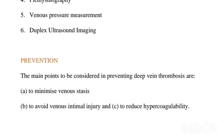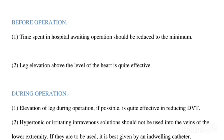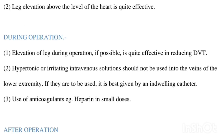Preventive measures: the main points to be considered in preventing DVT are to minimize venous stasis, to avoid venous intimal injury, and to reduce hypercoagulability. Preoperative care: time spent in hospital awaiting operation should be reduced to a minimum, and leg elevation above the level of the heart is quite effective. During operation, elevation of the leg during operation, if possible, is quite effective in reducing DVT. Hypertonic or irritating intravenous solutions should not be used into the veins of the lower extremities; if they are to be used, it is best given by an indwelling catheter. Use of anticoagulants, for example, heparin in small doses, is also recommended.